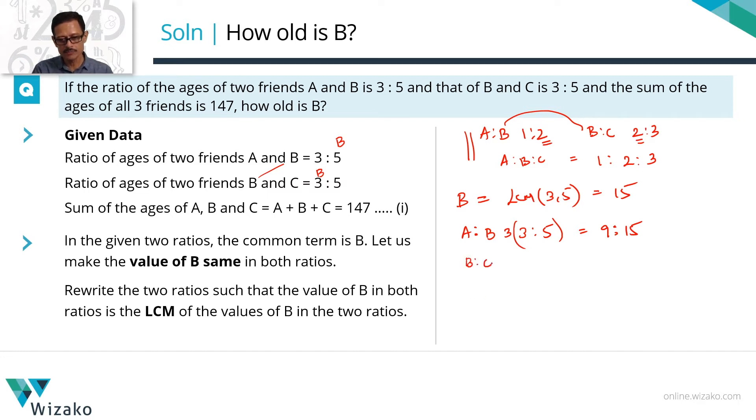Let's do the same thing with B is to C. B is to C is also 3 is to 5. The value of B here is 3. We need to make it 15 which means we need to multiply this ratio with 5. So this becomes 15 is to 25 which still is the same 3 is to 5. But now this is 9 is to 15. The second ratio is 15 is to 25 leaves us with a numerical value of B as the same in both the ratios.